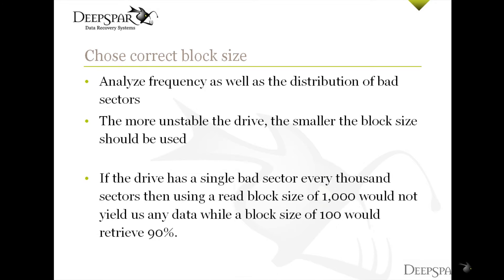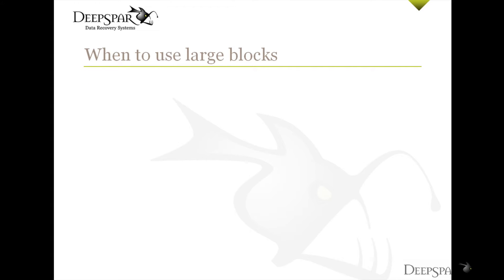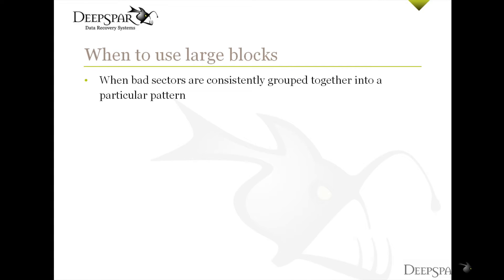For example, if a hypothetical drive has a single bad sector every thousand sectors, then using a read block size of 1000 would not yield us any data, while a block size of 100 would retrieve 90%. Larger block sizes can still make sense in some cases of heavy read instability — if the bad sectors happen to be consistently grouped together into a particular pattern, then we would want our block size to take that into account. The core idea is to choose a block size large enough so that it would fit the common bad sector groupings within it.